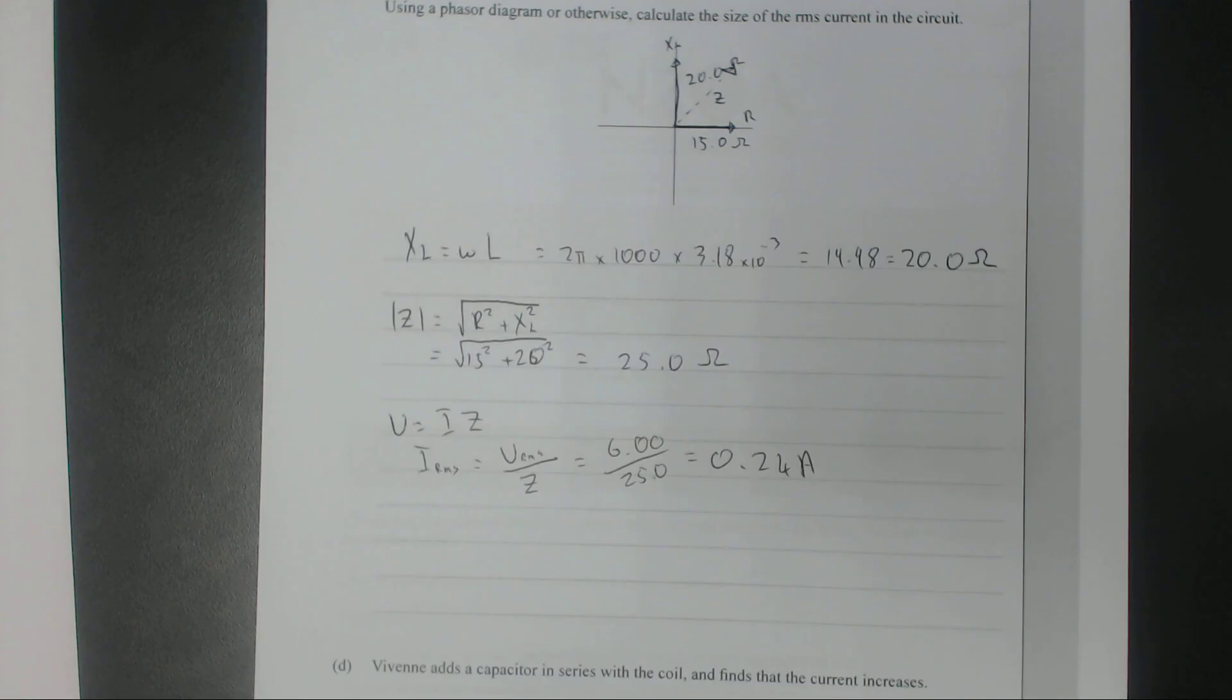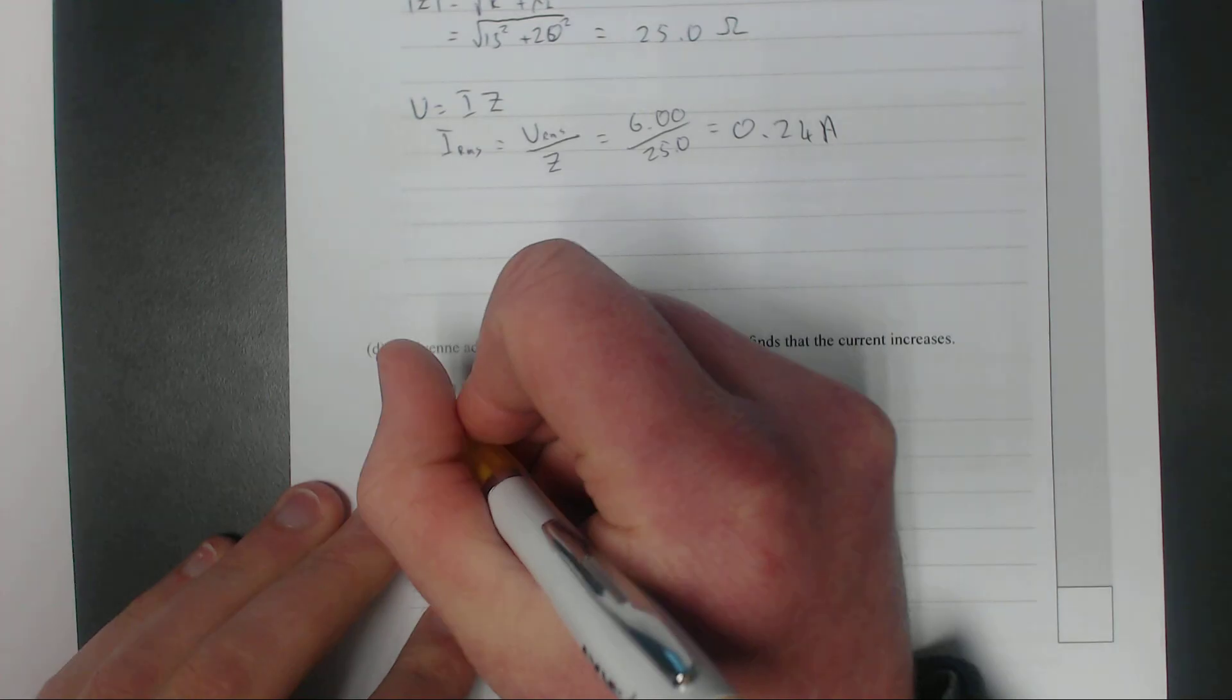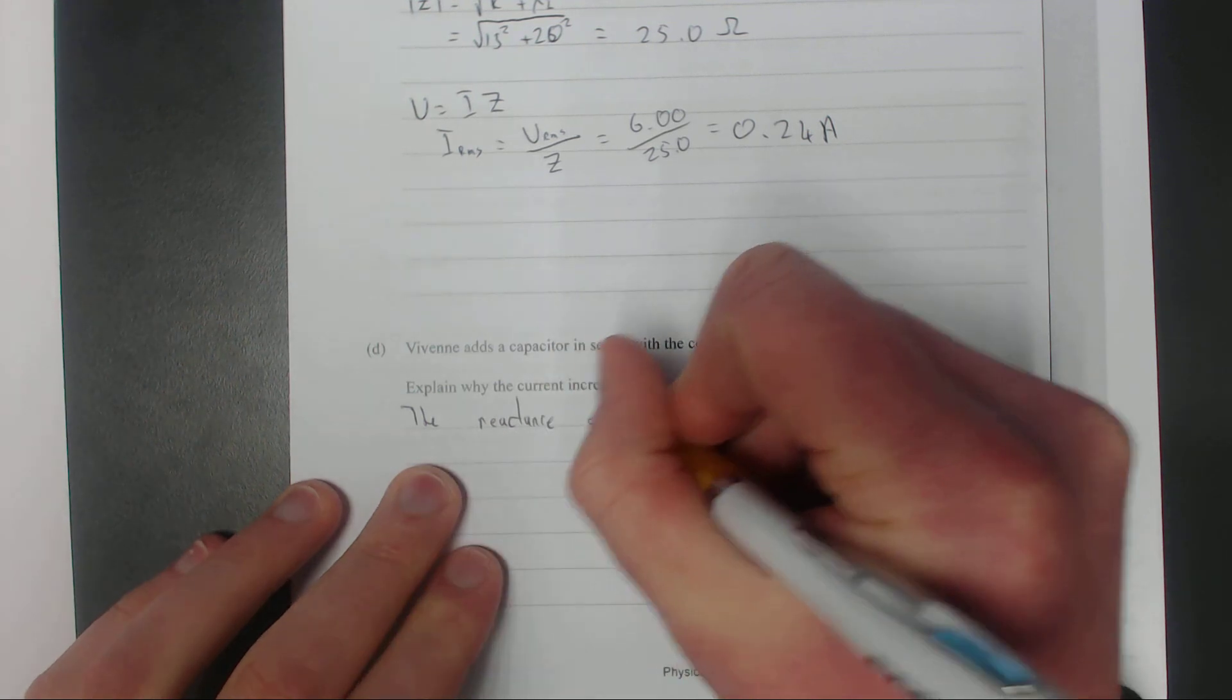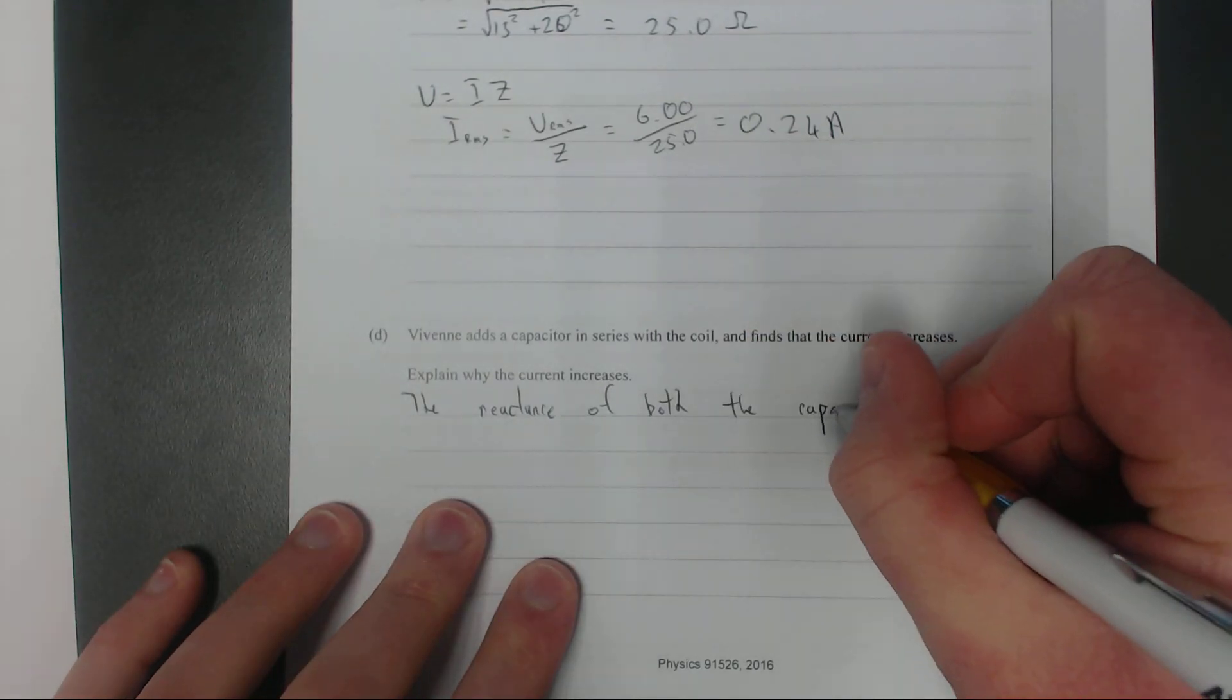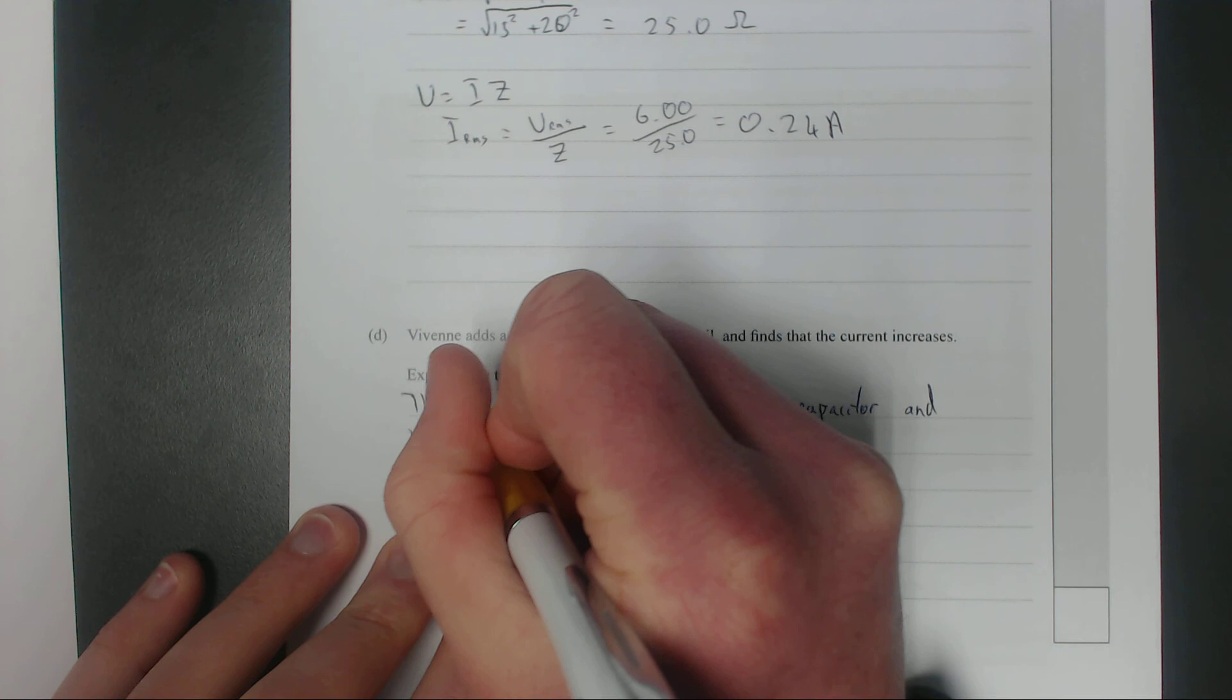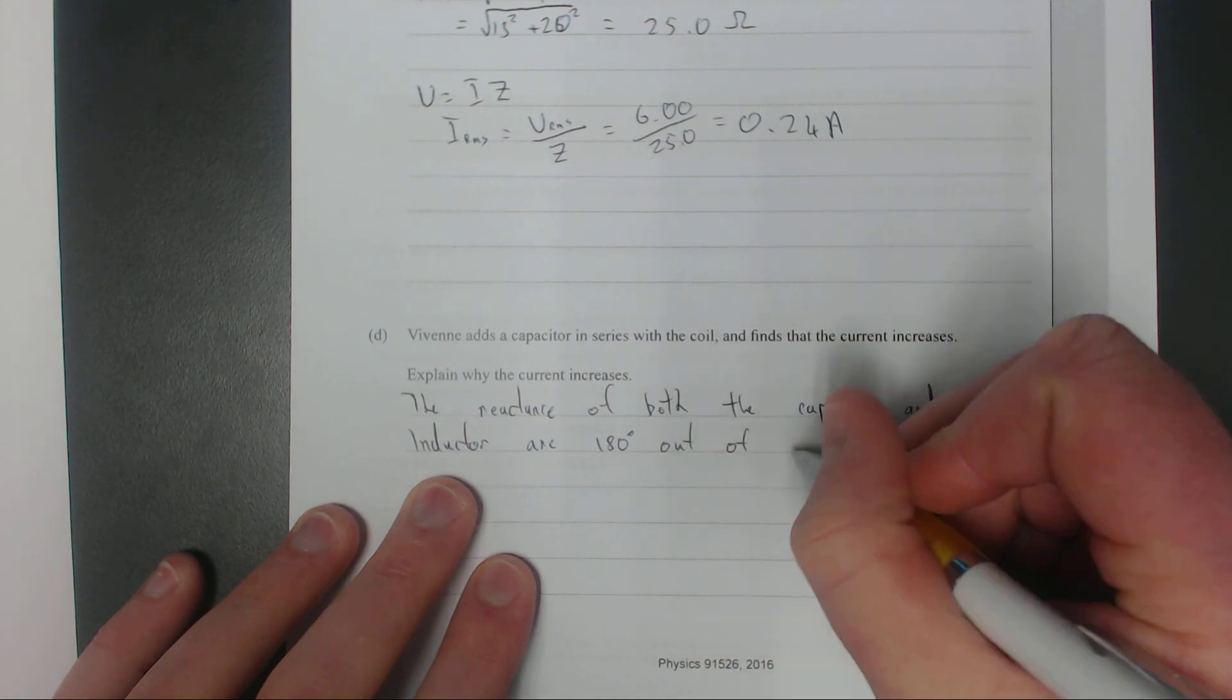Vivian adds a capacitor in series with the coil and finds that the current increases. Explain why this happens. The reactance of both the capacitor and inductor are 180 degrees out of phase. The marking schedule says you don't have to put 180 degrees out of phase, but if you say something's out of phase, it just means they're not on the same axis.